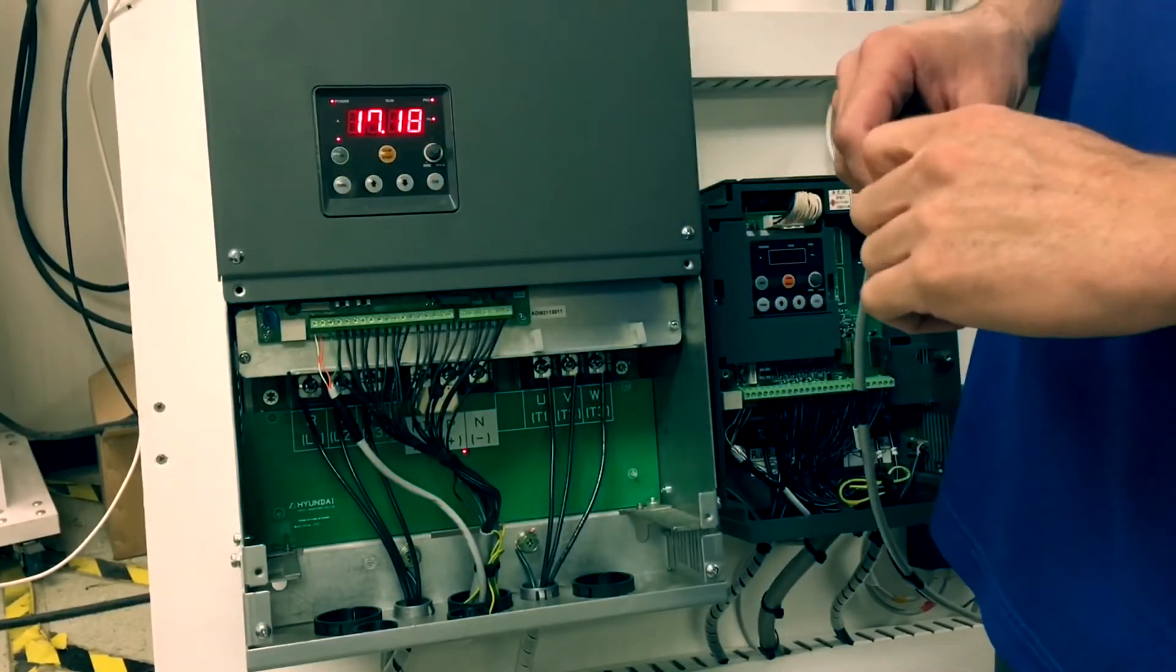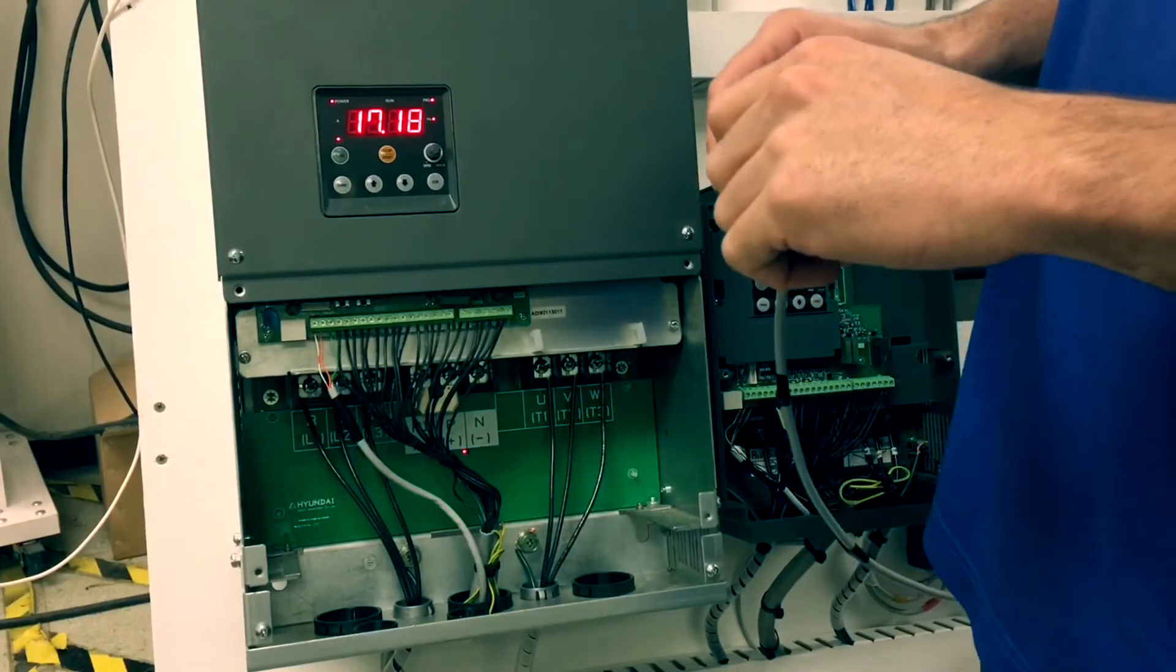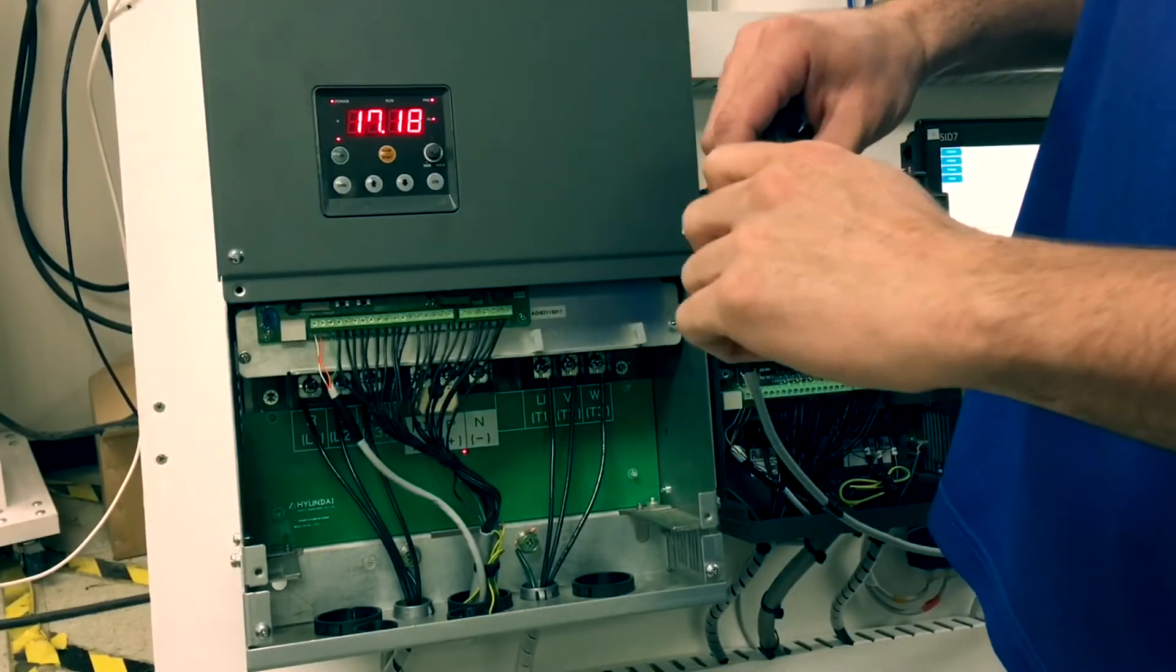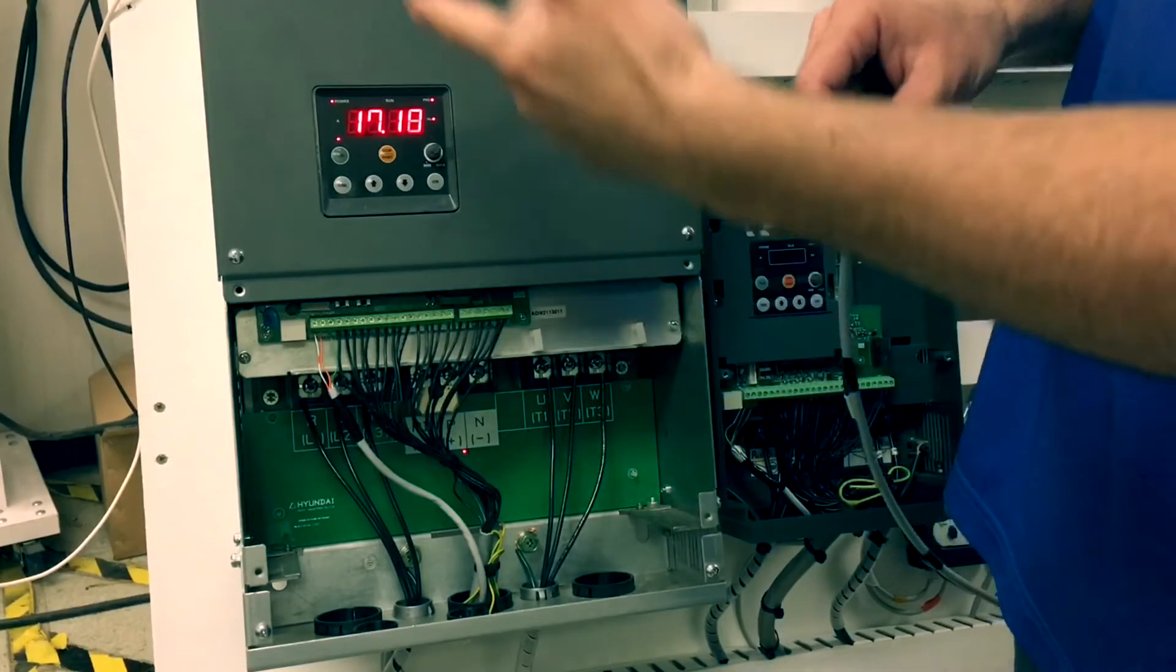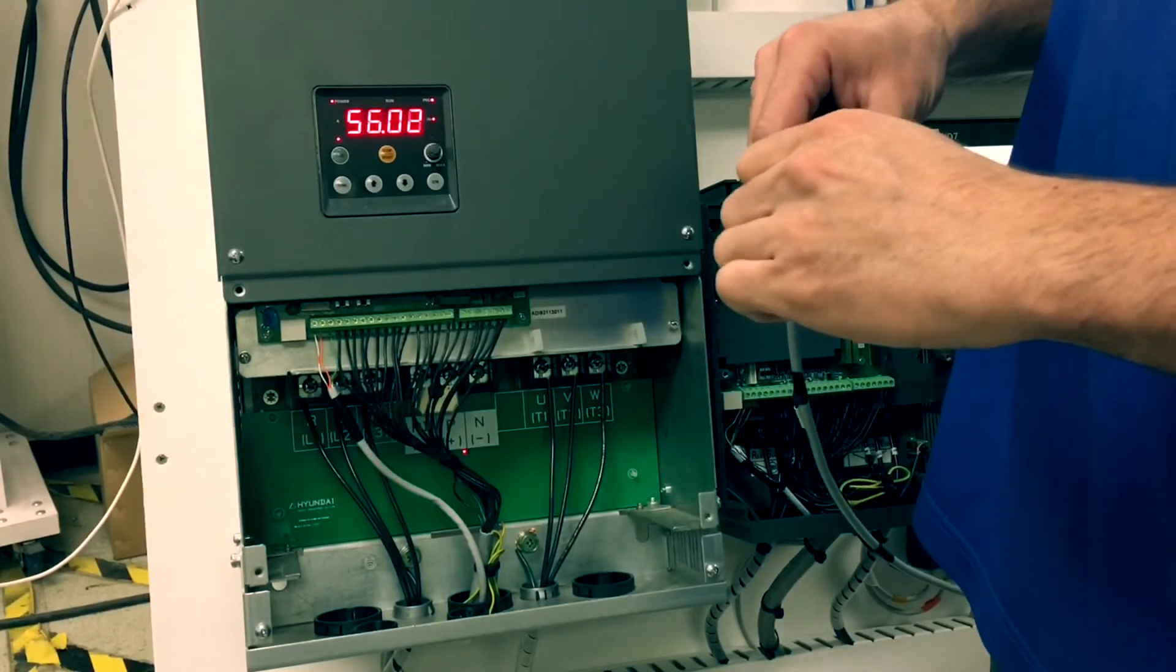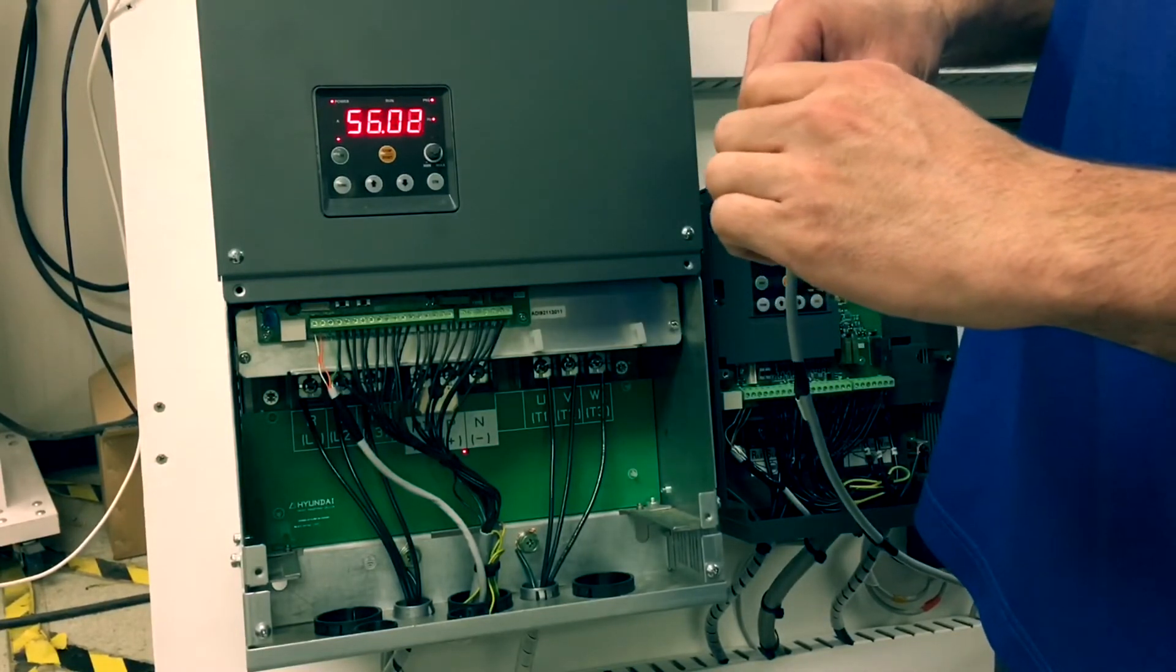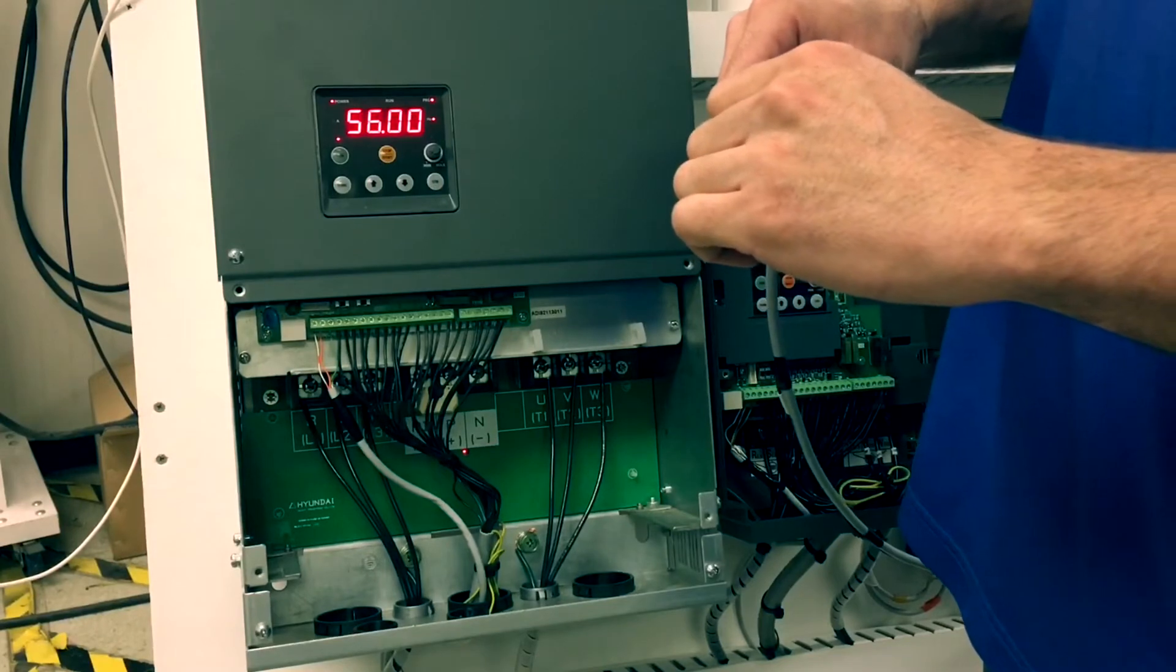You will see 0 volts on the potentiometer will read 17 hertz, and at 10 volts on the speed potentiometer you will roughly see 56 hertz. We need this to show 0 to 60 hertz.